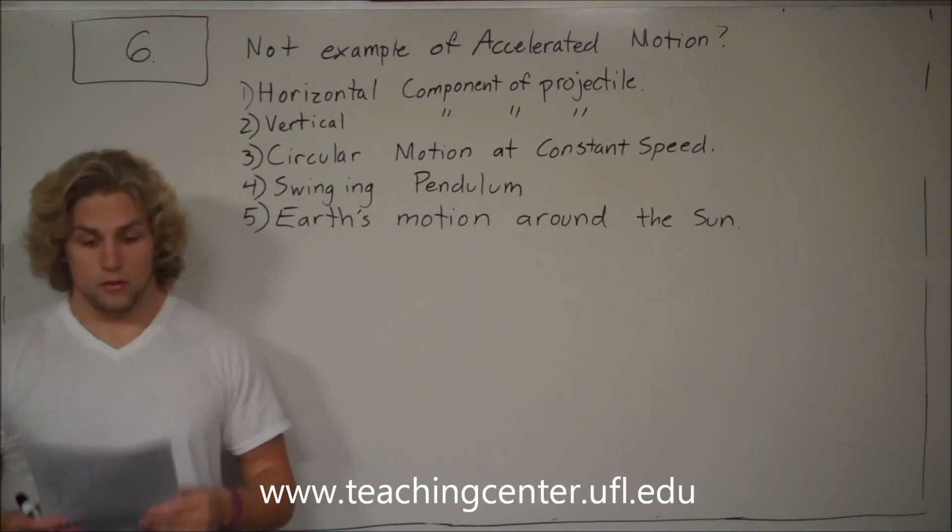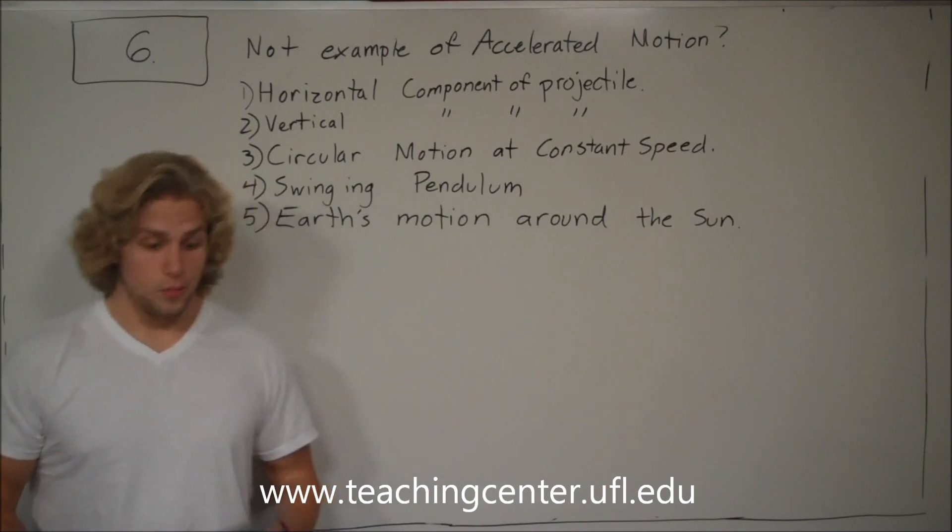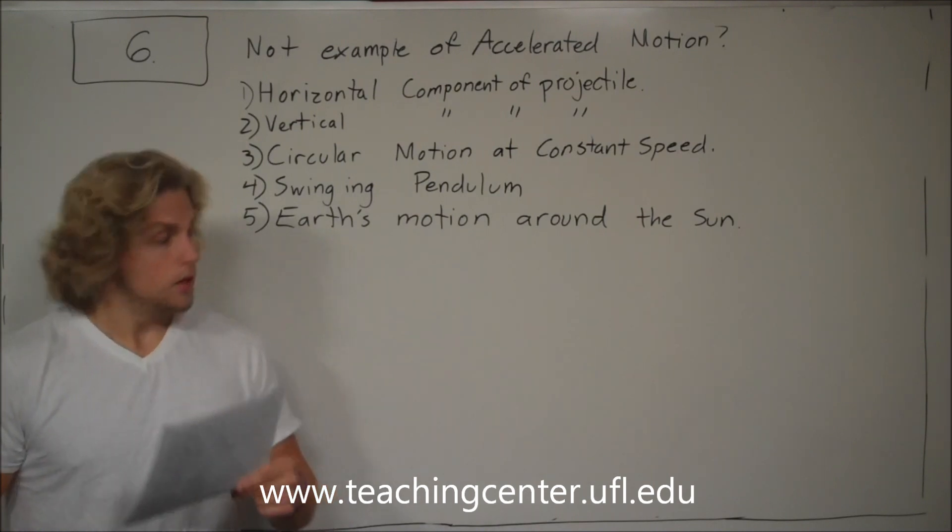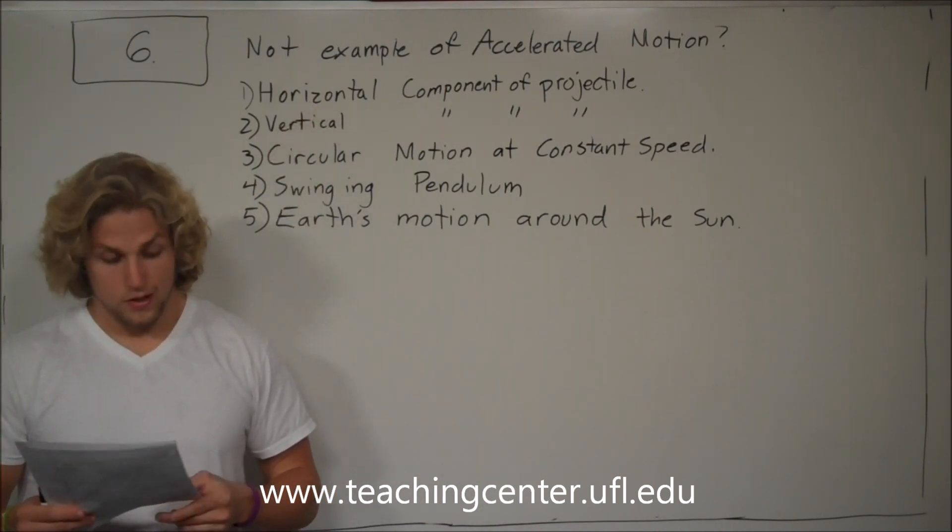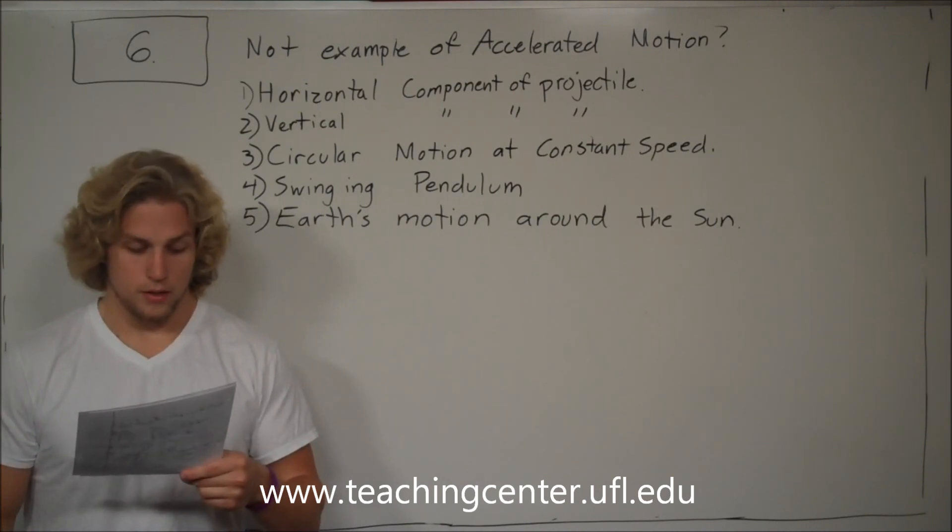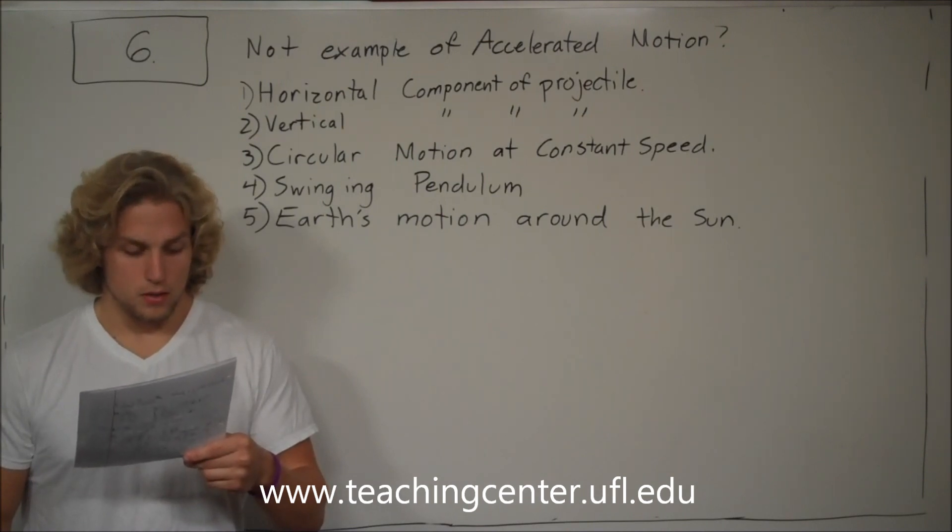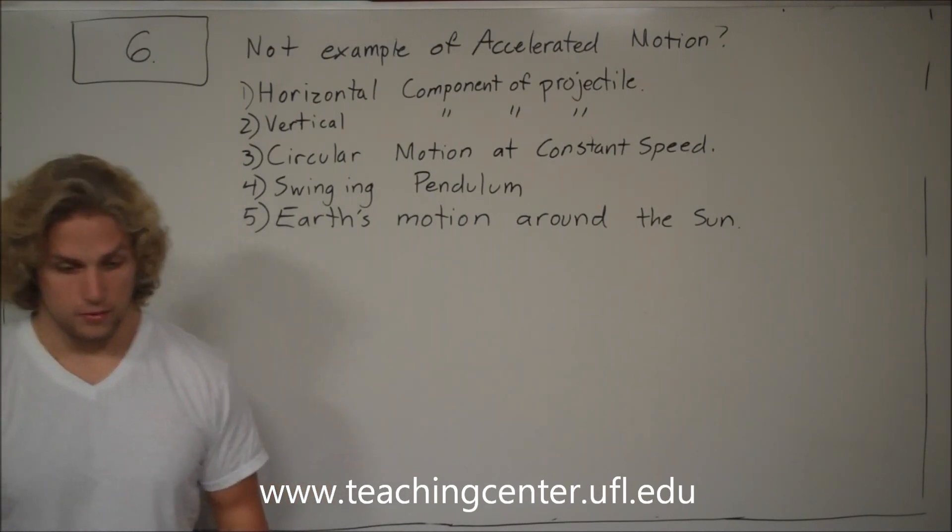This is problem six, a concept question asking which of the following is not an example of accelerated motion. Number one: horizontal component of projectile motion. Two: vertical component of projectile motion. Three: circular motion at constant speed. Four: a swinging pendulum. And five: Earth's motion around the sun.